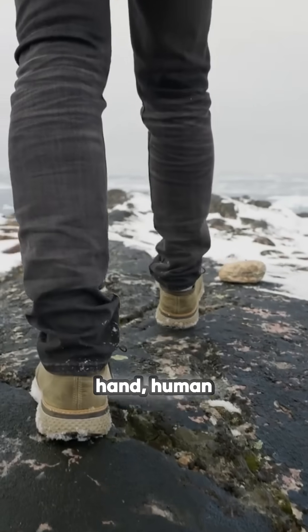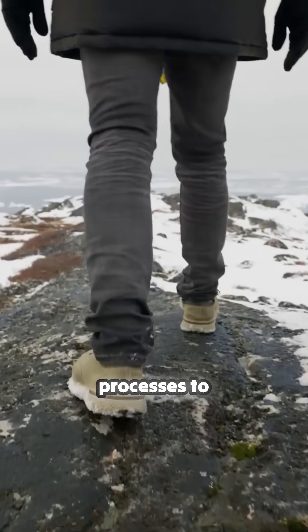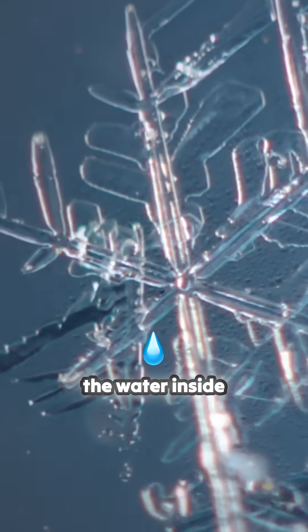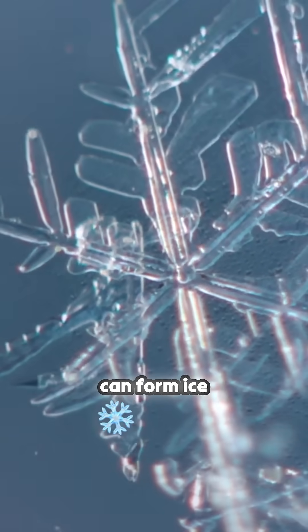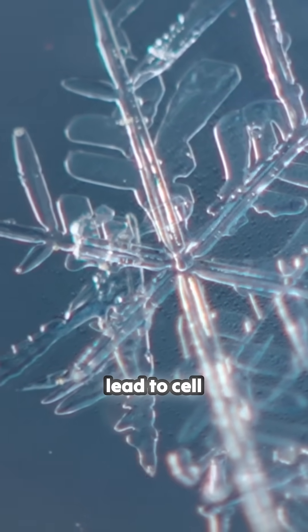On the other hand, human cells are highly dependent on a delicate balance of internal processes to survive. So when exposed to freezing temperatures, the water inside human cells can form ice crystals, which can disrupt cellular structures and lead to cell death.